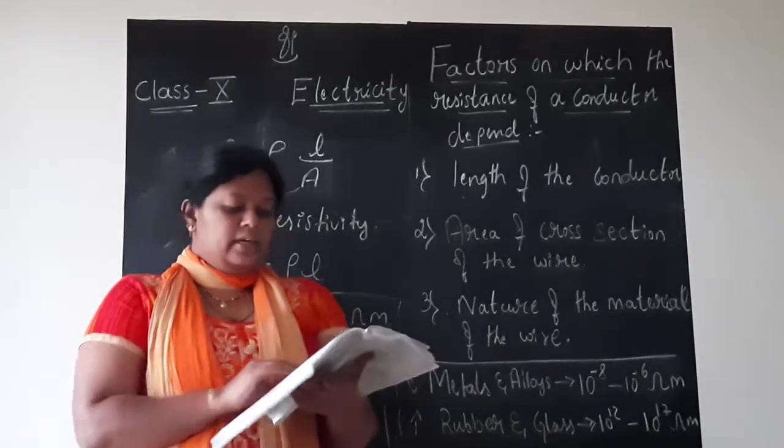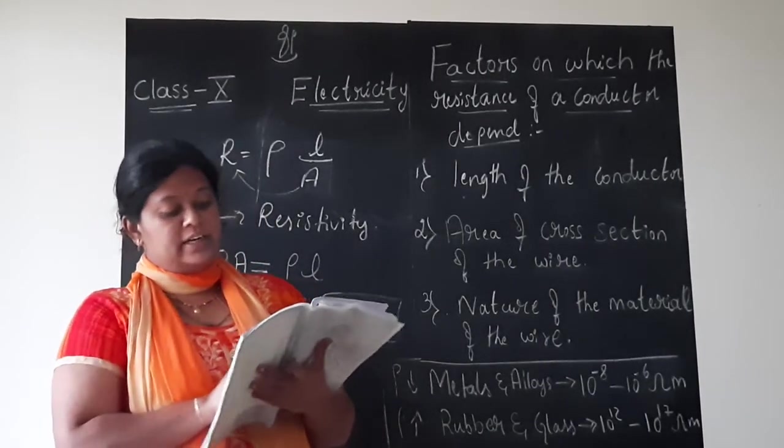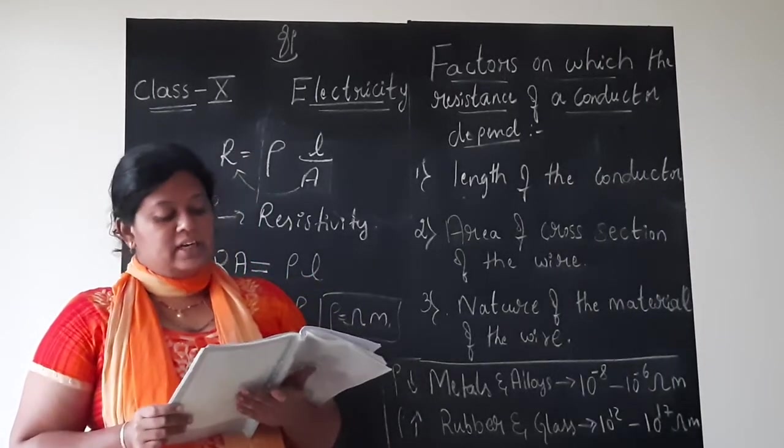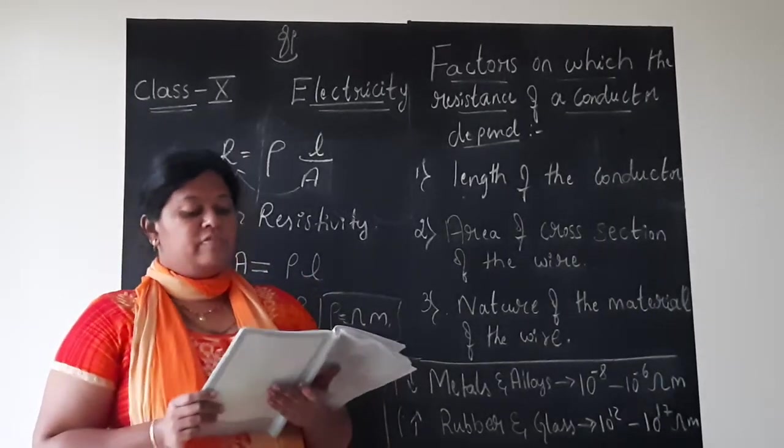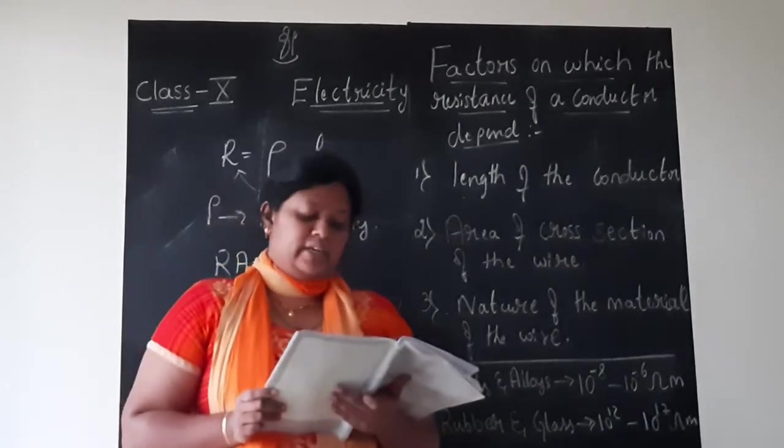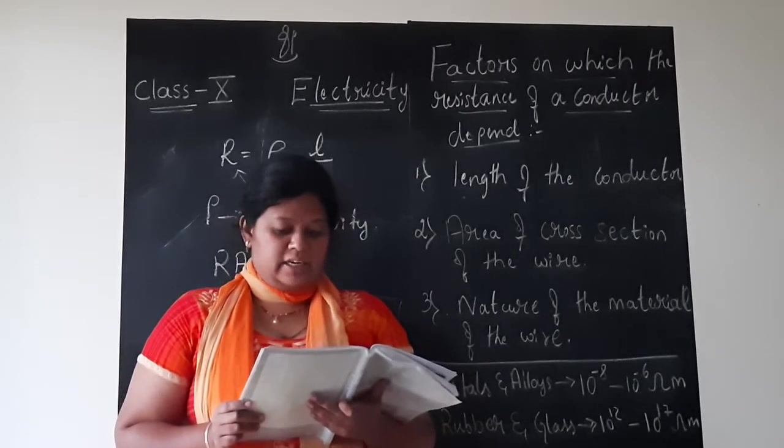Now here in your textbook children, they have defined it as rho is a constant of proportionality and it is called electrical resistivity of the material of a conductor. The unit of resistivity is ohm meter. It is a characteristic property of the material.